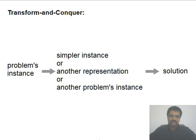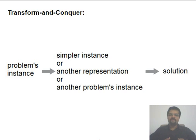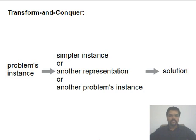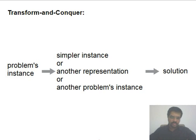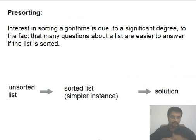Hello, welcome to another introductory session on algorithms. In this session we are going to talk about a technique called transform and conquer. The idea is to take a problem's instance, find an intermediate instance, transform it, and then find a solution for that. We do this because the intermediate instance could be simpler to solve, or another representation we are familiar with, or an instance of another problem for which we know a good solution.